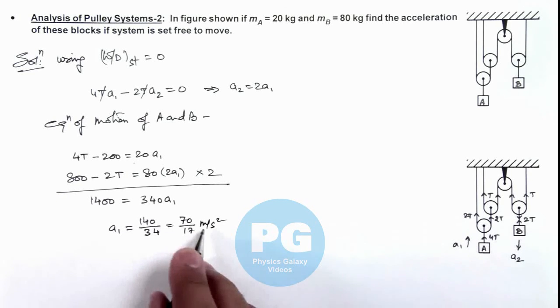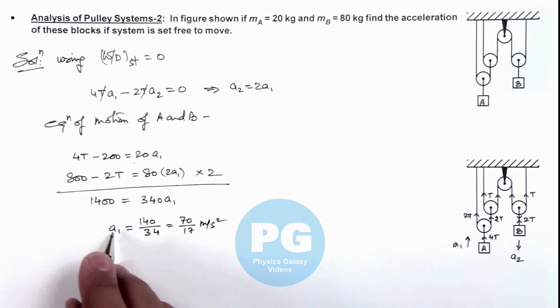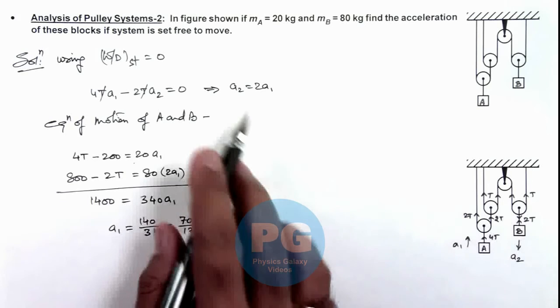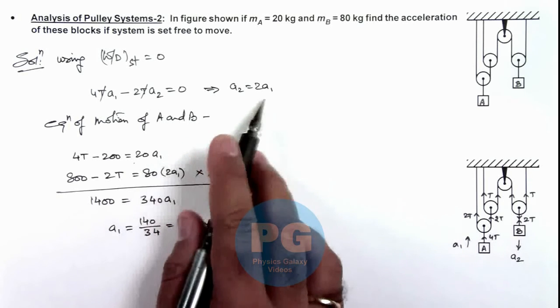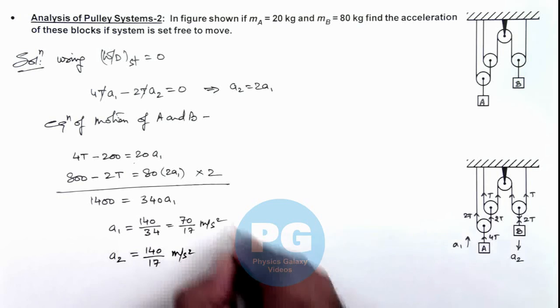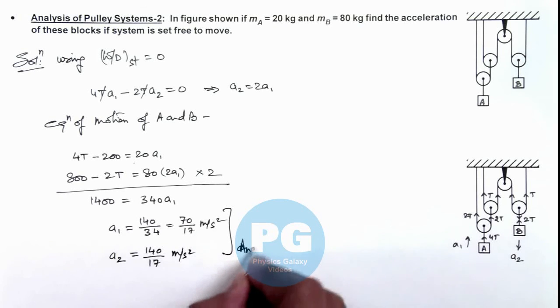This is the acceleration of block A which is going up. Block B which is coming down with acceleration a₂, and here we are having the value of a₂ is equal to 2 a₁. So we can write the value of a₂ is twice of this, is 140 by 17 meter per second square. So these will be the final result of this problem.